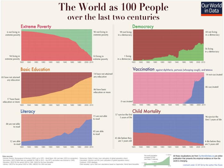The Our World in Data team has partnered with several organizations. The publication is funded by donations from hundreds of readers and by research grants, including grants from the Nuffield Foundation and the Bill and Melinda Gates Foundation. The research team is based at the Oxford Martin School.